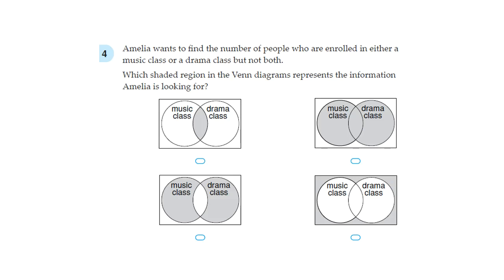Question 4. Amelia wants to find the number of people who are enrolled in either a music class or a drama class, but not both. Which shaded region in the Venn diagram represents the information Amelia is looking for? It's saying in either the music class or the drama class, but not both.